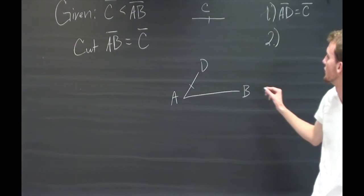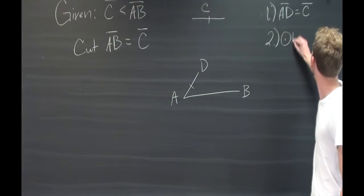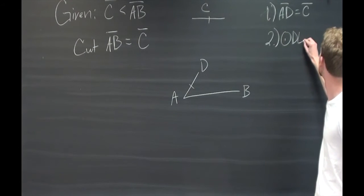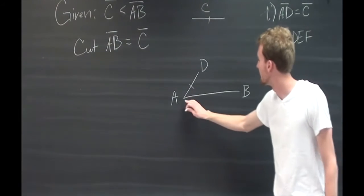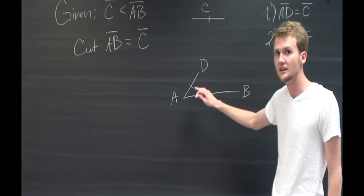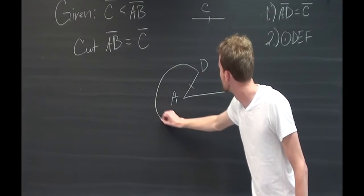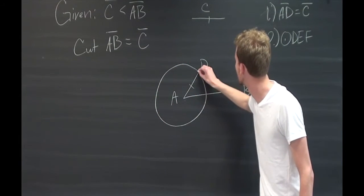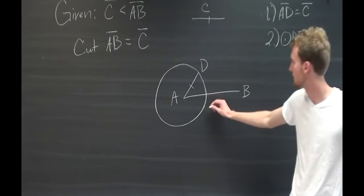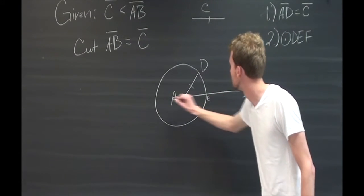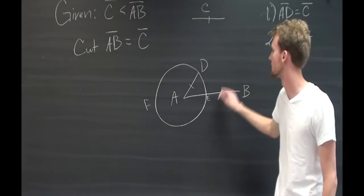Next, we're going to create a circle DEF with A as our center and AD as our radius. We're going to call the point where it intersects line AB point E, and we'll label this point. So that's circle DEF.